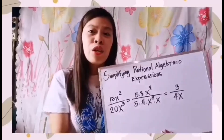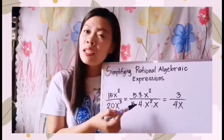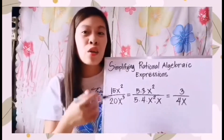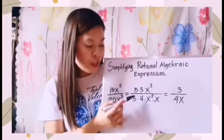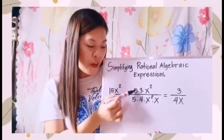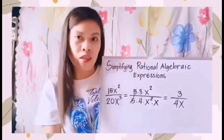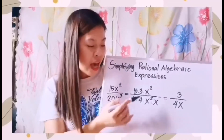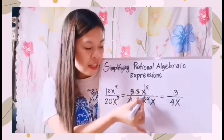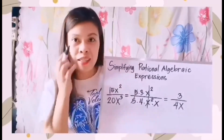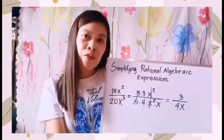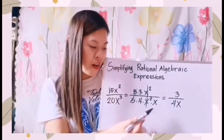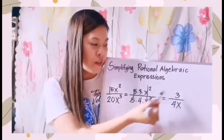Now we look at the numerator and denominator for common numbers, common variables, or common terms. We have 5 and 5 — divide those out. For 3 and 4, they are not common. We have x squared and x squared — divide those out. The remaining x in the denominator has no match on top. Picking up the remaining numbers and variables, we have 3 over 4x.